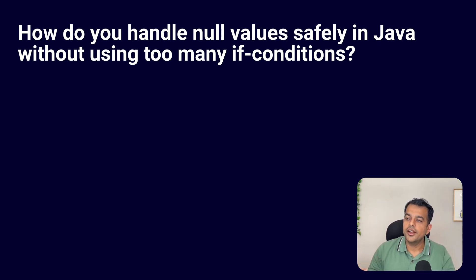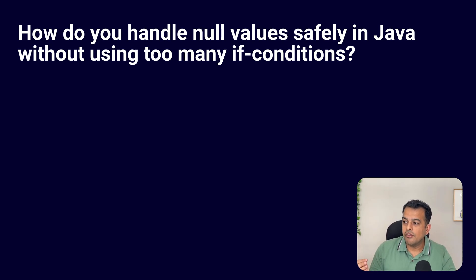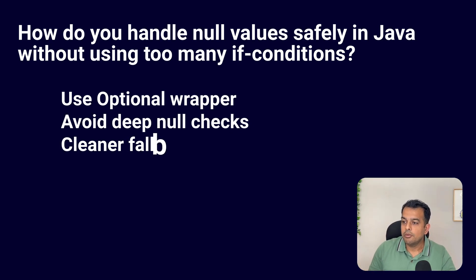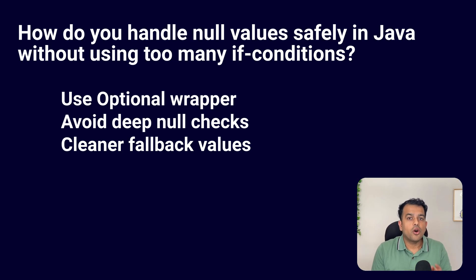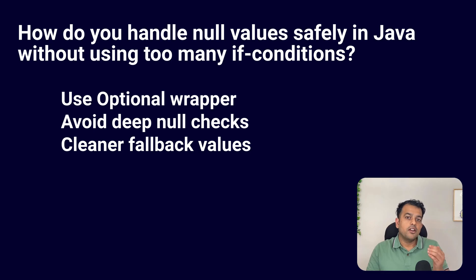Then the interviewer asked a coding-based Java question: how do you handle null values safely in Java without using too many if conditions? It is actually a question about the Optional class. In Java 8 and above, we use Optional to avoid NullPointerExceptions. Optional wraps a value that can be null. We can use orElse, orElseGet, or isPresent methods to handle it safely. It removes nested null checks, makes the code cleaner and easier to maintain, and is mostly used for method return types.